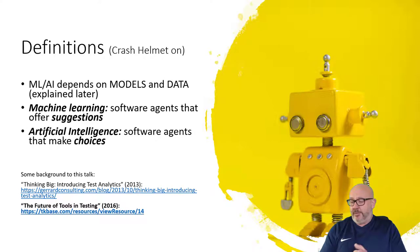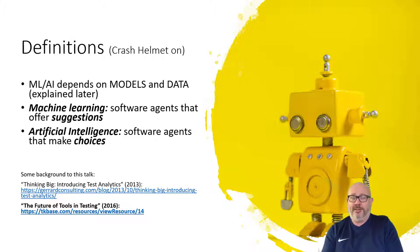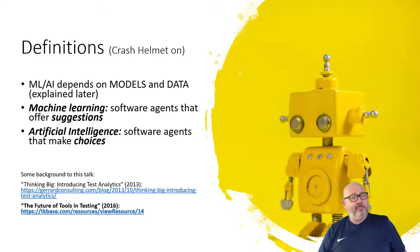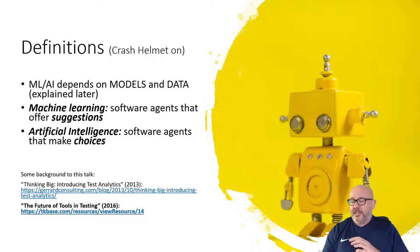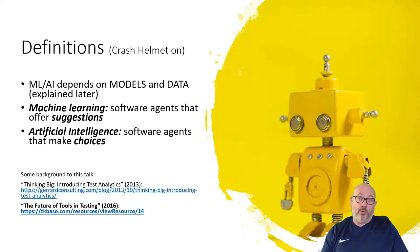I'm going to give you two definitions very quickly. I'm going to suggest that machine learning represents software agents that make suggestions, that offer suggestions, if you like. And artificial intelligence are software agents that make choices. We may allow computers to make choices, or we may want to approve them before the choices are actually made, and we may have an offer of several choices. In a very simplistic way, machine learning and artificial intelligence offer suggestions, or they make choices, or both.